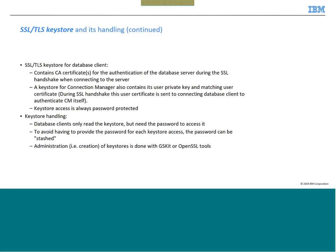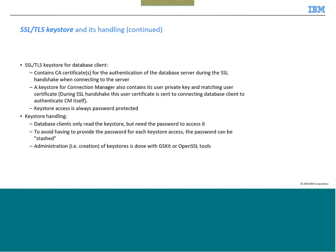What does the client keystore contain? The client keystore generally contains CA certificates — that is, certifying authority certificates — for authentication of the database server during SSL handshake. The keystore for the connection manager also contains its user private key and matching certificate. Your keystore access is always guarded by a password. Database clients only read the keystore but need the password to access it, so every access to the keystore requires a password.